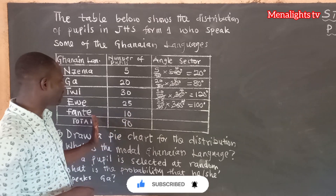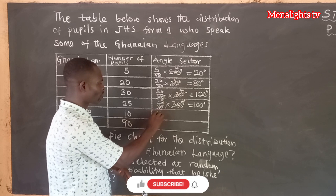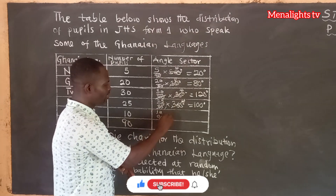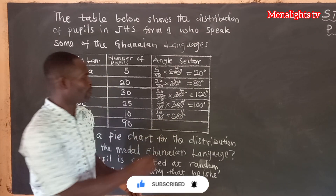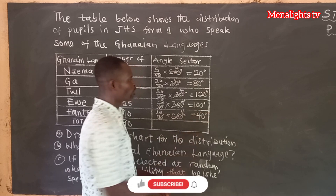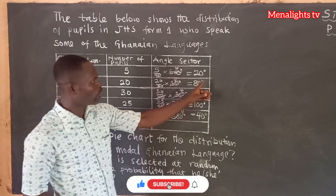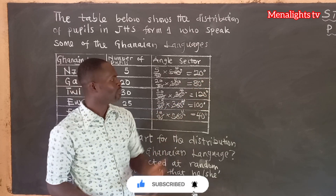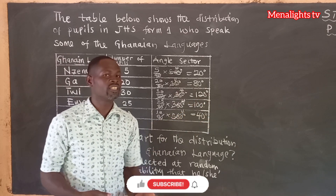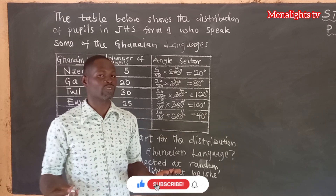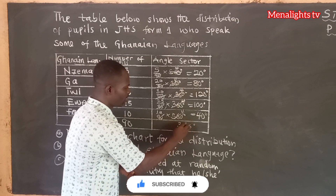Then we come to the last one, Fanti, which has 10 students. So 10 over 90 times 360 degrees. 90 goes into 360 four times, and 4 times 10 gives us 40 degrees. When we add all of these, we are supposed to get 360 degrees. So 20 plus 80 is 100, plus 100 is 200, plus 120 is 320, plus 40 gives us 360 degrees. The total is 360 degrees.